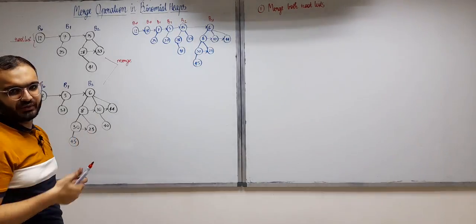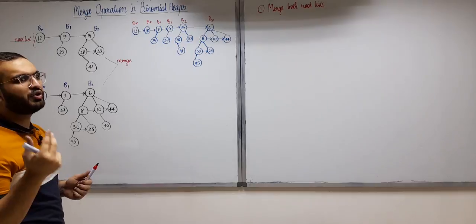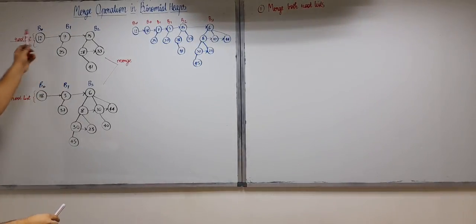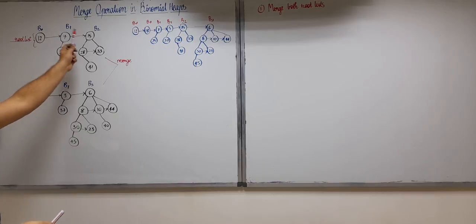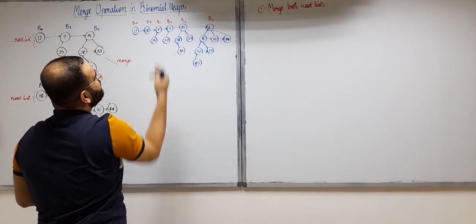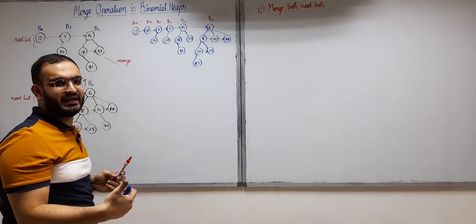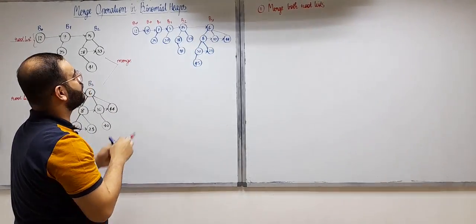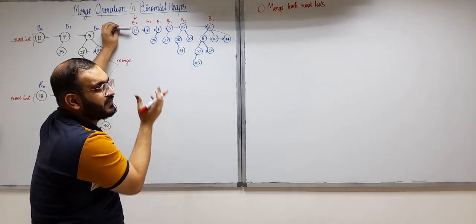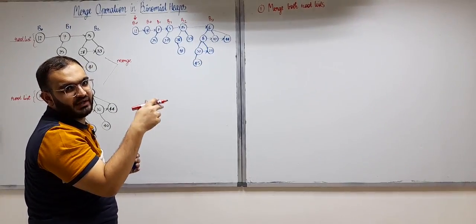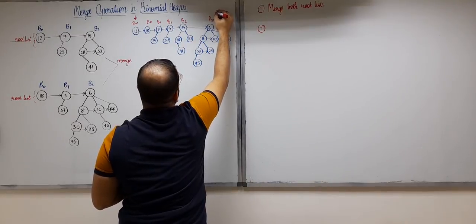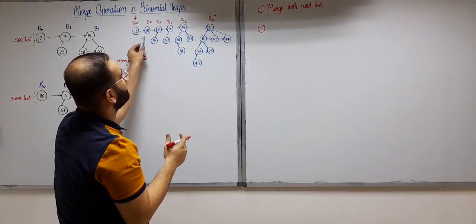A binomial heap cannot have more than one binomial tree of the same order. After merging the root lists we have two B0s and two B1s, which is not valid. So the merge operation is still incomplete. We need to start from the beginning of the root list and wherever we encounter binomial trees of the same order, we merge those two trees until we reach the end of the root list.